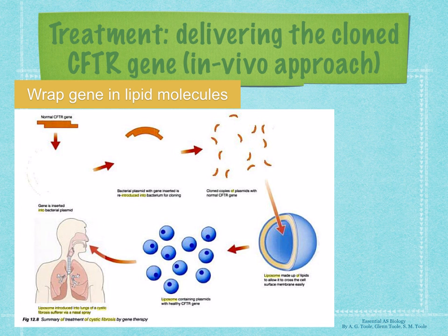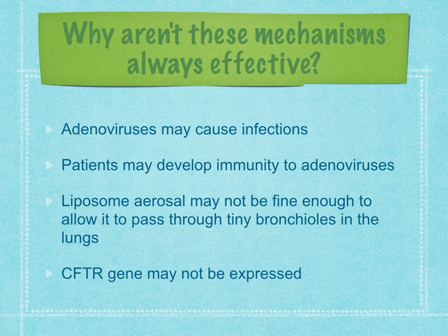A second mechanism is to wrap the gene in lipid molecules. The CFTR gene is inserted into a bacterial plasmid, and the plasmids are wrapped into liposomes — lipid spheres that can easily cross the epithelial membrane — and introduced using a nasal aerosol spray. However, these delivery methods are not always effective: adenoviruses may cause infections, patients may develop immunity to adenoviruses, liposome aerosols may not be fine enough to pass through the tiny bronchioles, and the CFTR gene may not be expressed in the cells.